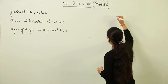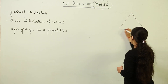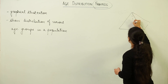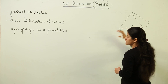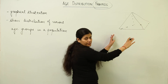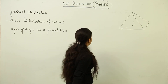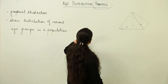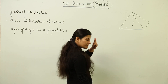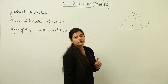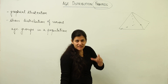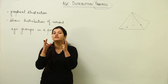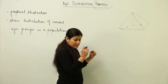Now concentrate on the term 'pyramid.' What does a pyramid look like? It looks like this — something triangular. This is what a pyramid is. In the age distribution pyramid, you are going to represent the population in terms of the percentage of individuals belonging to different age groups.